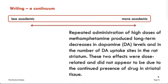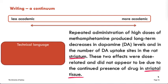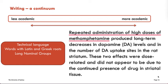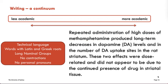Here's a more academic text. Where do you think it comes from? You can pause the video to read it. This is an excerpt from a journal article. We can find examples of technical language, including words coming from Latin and Greek. We also have quite long nominal groups — this one, for example, has seven words — and there are no contractions or personal pronouns.